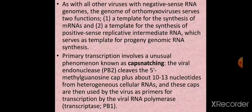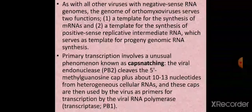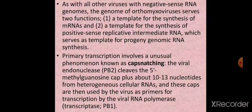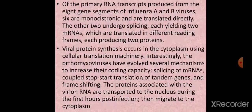A very important point for orthomyxoviruses is that primary transcription involves an unusual phenomenon known as cap snatching. This is peculiar to the orthomyxoviridae family. Viral endonucleases cleave the 5' methyl guanosine cap plus about 10–13 nucleotides from heterogeneous cellular RNAs. These caps are then used by the virus as primers for transcription by the viral RNA polymerase (transcriptase or PB1).